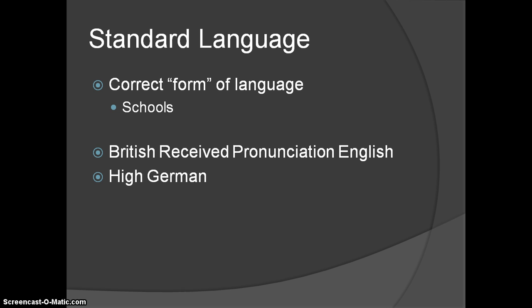When a language is taught, there is what's called the standard form of the language — the correct form as it should be spoken and written by the people of that country. This is typically the form taught in schools. In English, you can think about the academic form versus the slang or local vernacular, which varies across the country from the north to the south to the midwest, but we have the same standard form of English pronunciation and sentence structure taught in our schools.